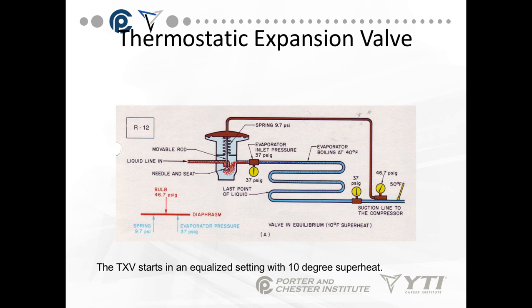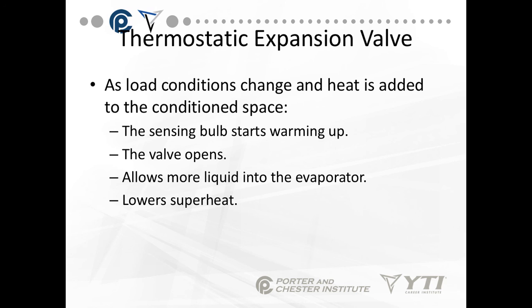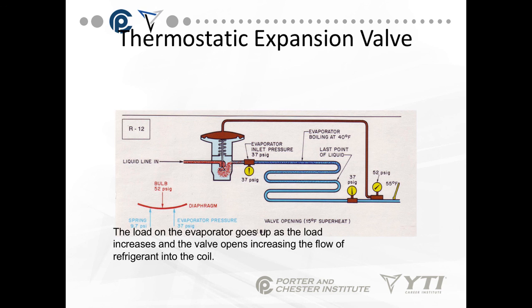Here's an example starting with an equalized setting at 10 degrees superheat using R12. The system is running normally — the bulb pressure is pushing down with 46.7 PSI, and the spring and evaporator pressure are pushing up with the same force, so we're at equilibrium. As load conditions change and heat is added to the conditioned space, the sensing bulb starts warming up, the valve opens and allows more liquid to the evaporator, and lowers the superheat. Now the bulb pressure is at 52 PSI pushing down, while spring and evaporator pressures are still at 46.7 PSI, so the bulb pressure has pushed the needle down and is allowing more liquid refrigerant into the evaporator.